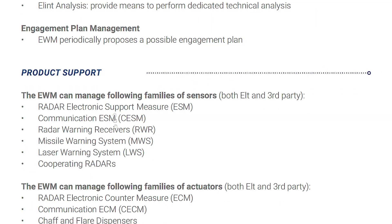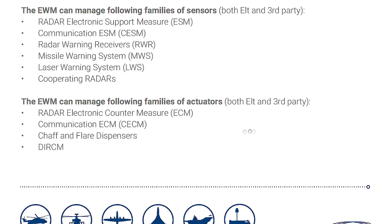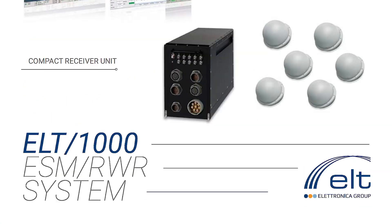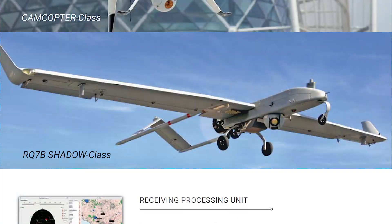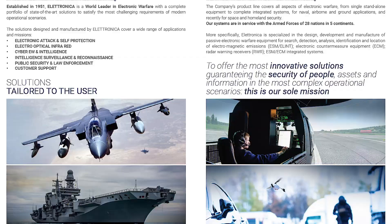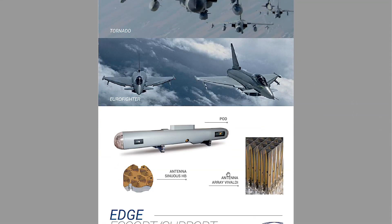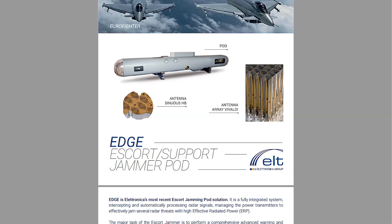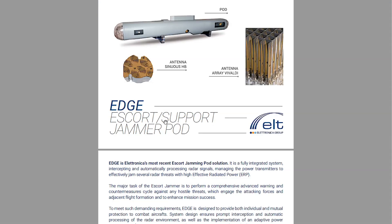Looking at the product range: ESM, communication ESM, radar warning receiver, missile warning system, and laser warning system — pretty much all of them. Some cool drones here with a radar warning system using six elements and six channels covering the platform. Also fighters — the famous Tornado and Eurofighter — with a typical pod on the side that also includes a jammer. These pods are used for jamming as mentioned.